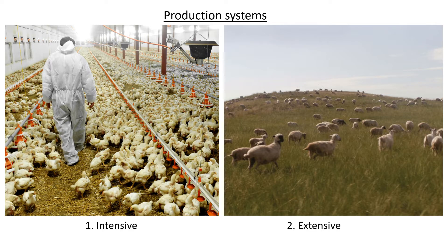The second system, extensive production, is usually what we think of when we think of farms. There is natural veld everywhere for the animals to walk around naturally, they exhibit natural behavior, and they decide when they want to drink, eat, or sleep. There is little human contact, and the farmer will only intervene when an animal is sick, hopefully providing antibiotics or medication to help.